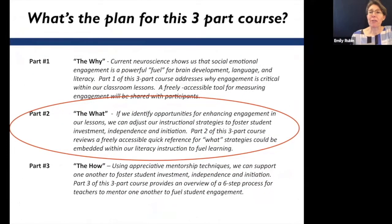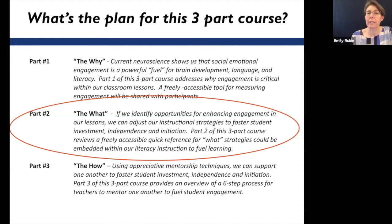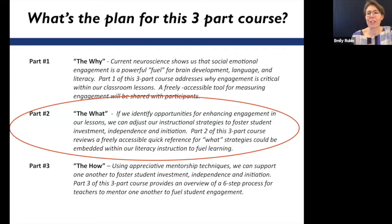So we have a three-part course going right now. We've already completed part one, which is the why. We reviewed the current neuroscience and how that shows us that social emotional engagement is a powerful fuel for healthy brain development, language development, and literacy. We addressed a freely accessible tool for measuring student engagement that was shared with all participants. Now we're on to part two, the what: figuring out how to adjust our instructional strategies to foster student investment, independence, and initiation. We'll review a freely accessible quick reference tool for strategies embedded within our literacy instruction.